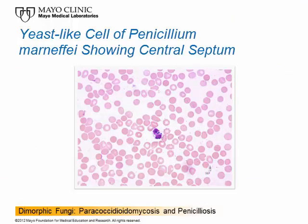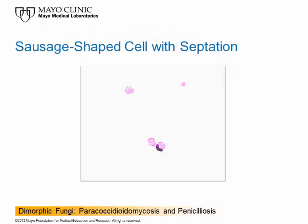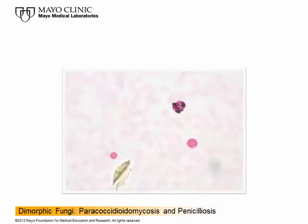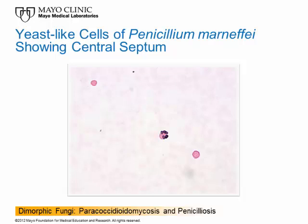This is a yeast cell of Penicillium marneffei in a patient with infection — this is blood. Hard to see in the center is a rectangular cell with a septum in the middle, and one that looks a little bit sausage-shaped. These cells are about two to five microns, about the same size as Histoplasma. Some people say they're easily confused, but I don't think they are. This cluster of Penicillium marneffei yeast-like cells shows elongated cells with a central septum dividing them in half — you can see one at about two o'clock on that cluster.